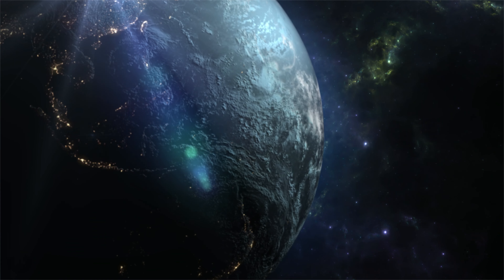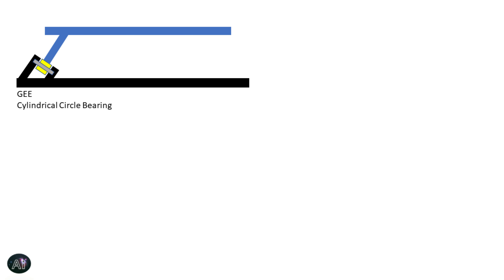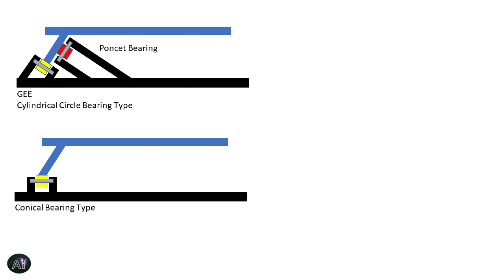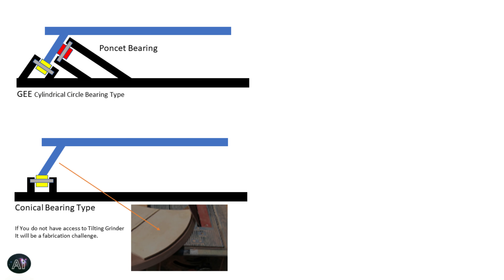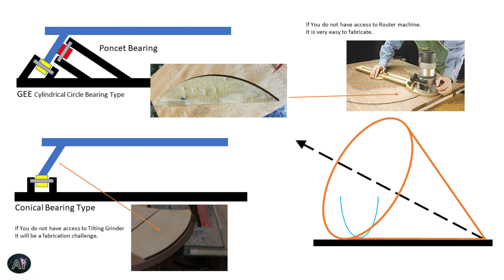Talking of the north bearing: for flat base type mounts, which is a mix and improvement of Poncet and Gee type bearings to support the north segment bearing, a sub-variant called the conical bearing type also exists. This is slightly very difficult to manufacture if you don't have access to a tilting type of grinder, so I would not recommend choosing a conical type of bearing.